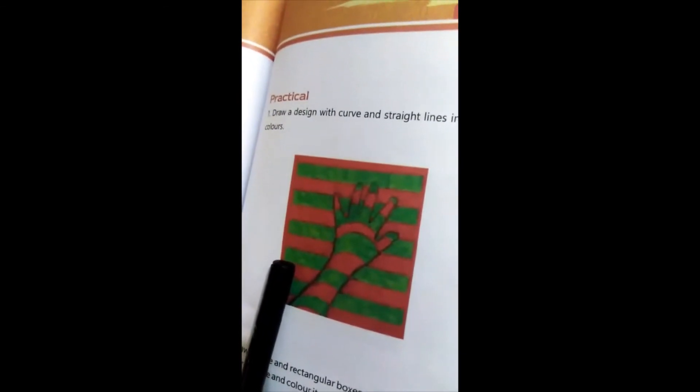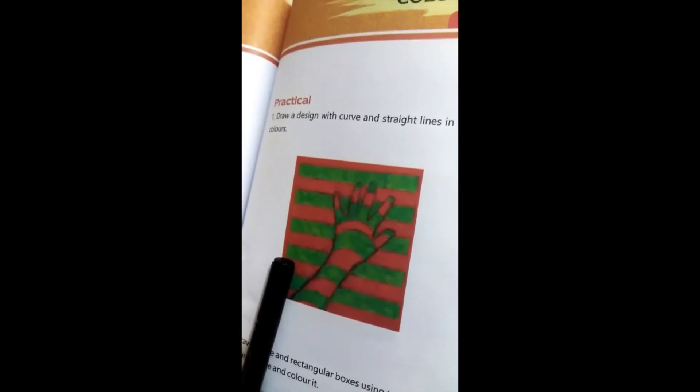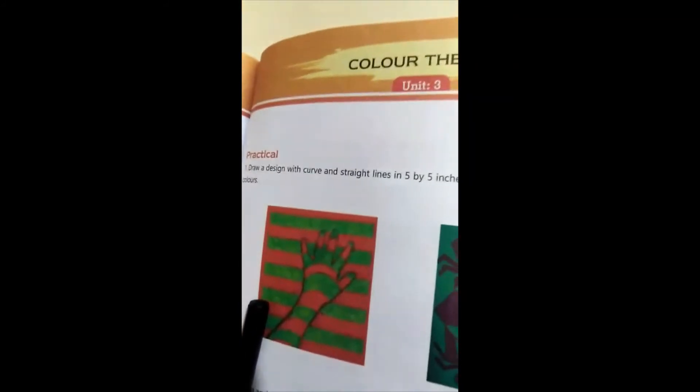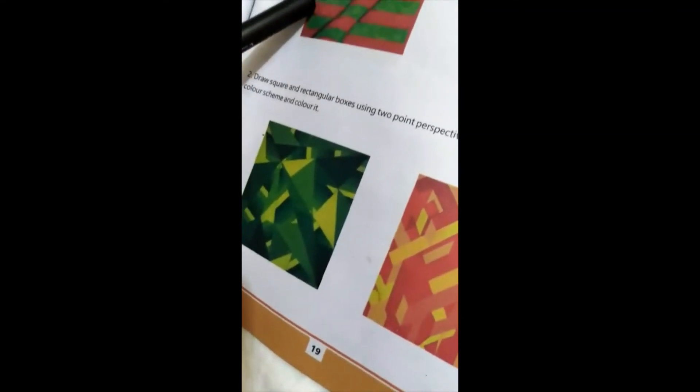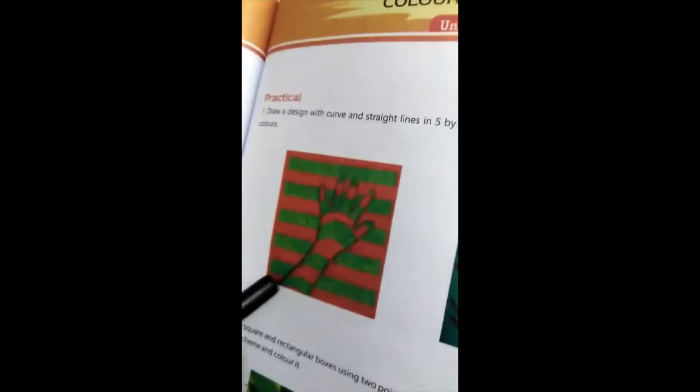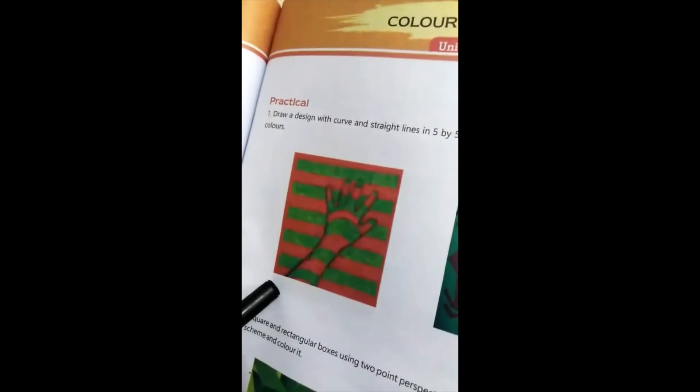You have to just make one design that should be five by five inches. You have to do it in your sketchbook. This is your practical for chapter three, unit three color theory on page nineteen. This is your example, but you have to create your own design. Thank you.